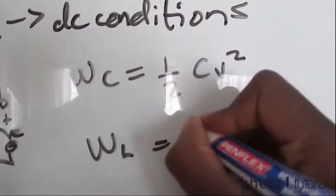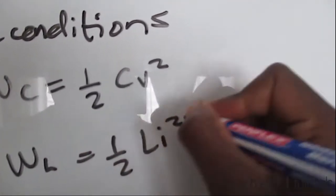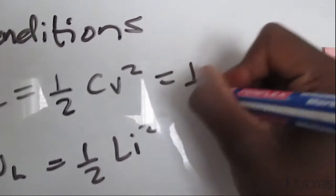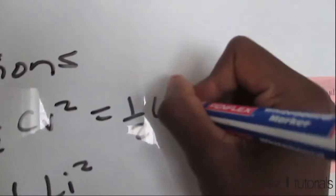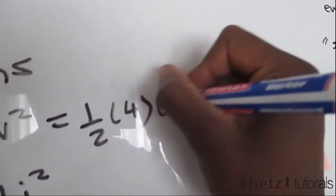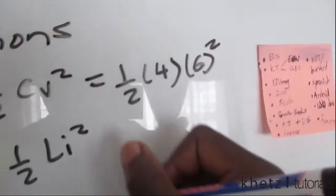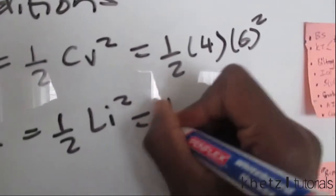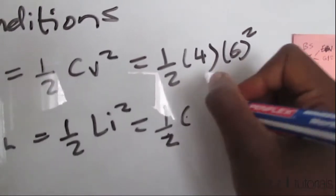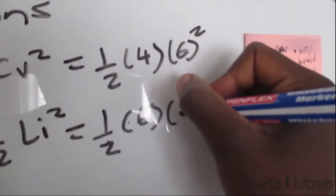So this is what we have: half C, the value of C is 4 farads, and the value of V as we found out is 6, so we're going to square that. Then again here, we have half L, the value of L is 6 henries, and I, the value of I we found to be 3.